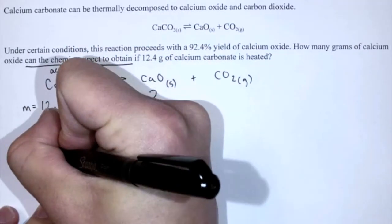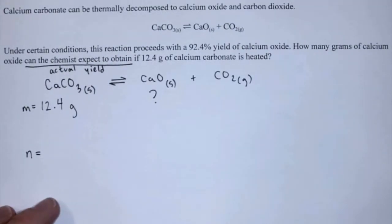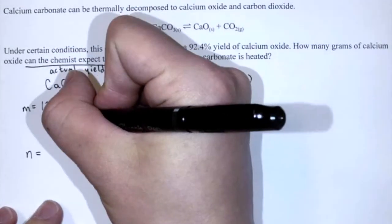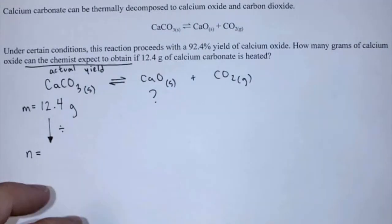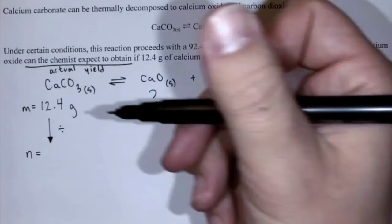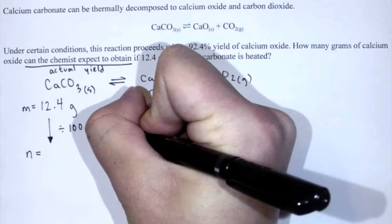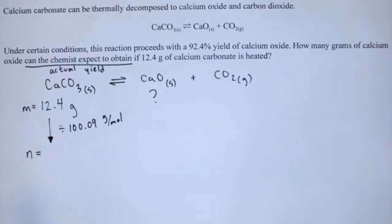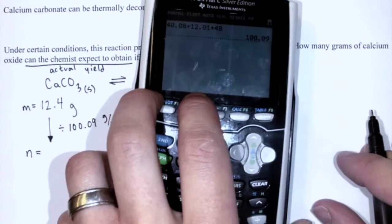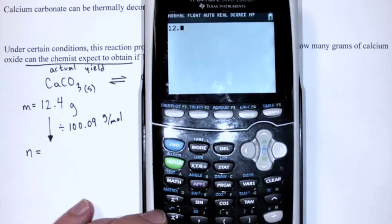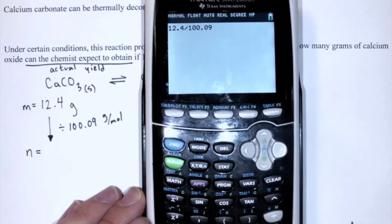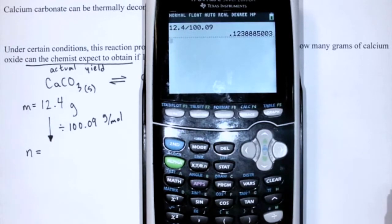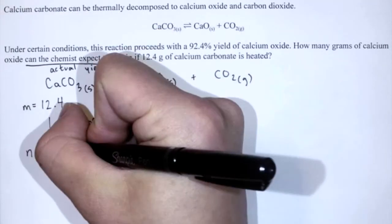Let's first convert mass of calcium carbonate into moles of calcium carbonate. To get from mass into moles I need to divide by the molar mass. The molar mass of calcium carbonate is around 100.09 grams per mole. So 12.4 divided by 100.09 gives us 0.124 moles.